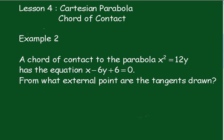Example 2: A chord of contact to the parabola x squared equals 12y has the equation x minus 6y plus 6 equals 0. From what external point are the tangents drawn?